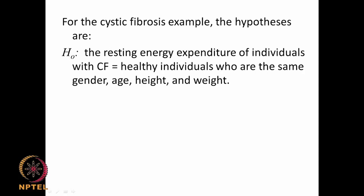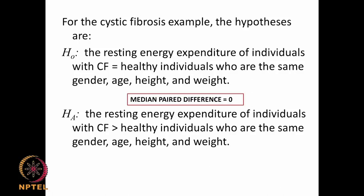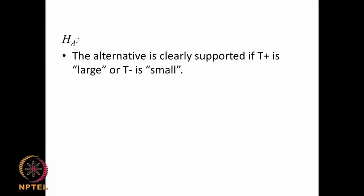H0: the resting energy expenditure of individuals with CF equals that of healthy individuals matched for gender, age, and height — meaning no difference in energy expenditure between CF and non-CF. HA: the resting energy expenditure of individuals with CF is greater than healthy individuals after adjusting for gender, age, height, and weight. We expect the pair difference greater than 0 for HA. We take the smaller of the two rank sums, which is T-minus equals 7.